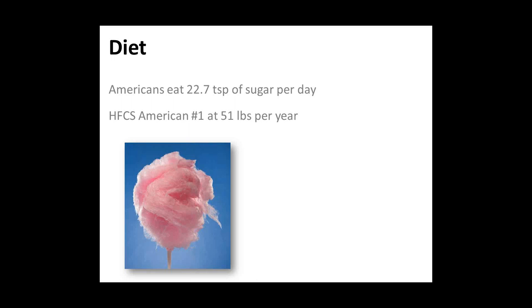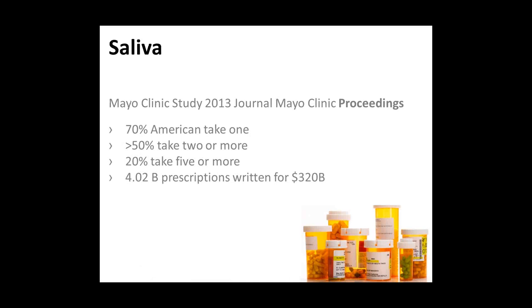Diet is a huge issue for Americans today. The average American eats 22.7 teaspoons of sugar per day. When it comes to high-fructose corn syrup, Americans are number one — we eat 51 pounds of high-fructose corn syrup per person per year. Mexico is number two at about 32 pounds. High-fructose corn syrup is certainly a health problem, and it just comes back to our entire diet — we consume way too much sugar.